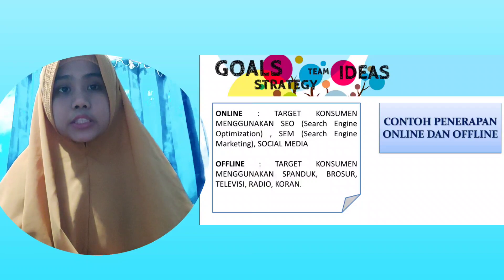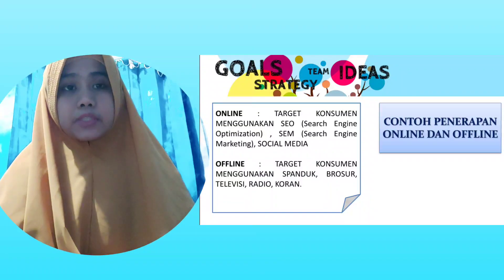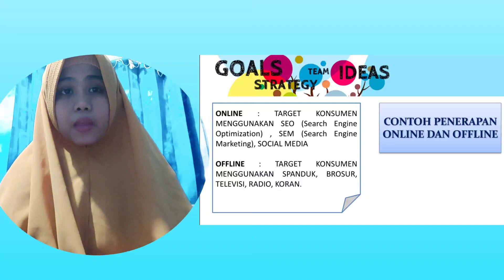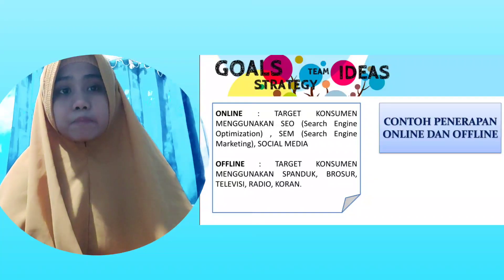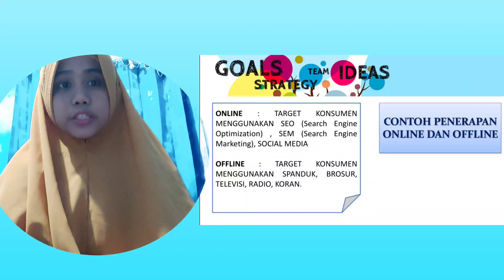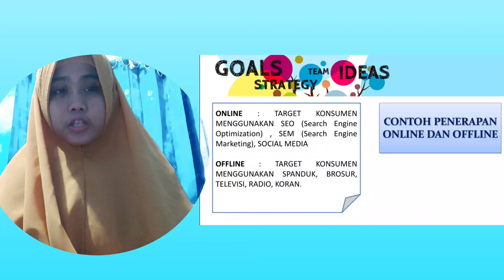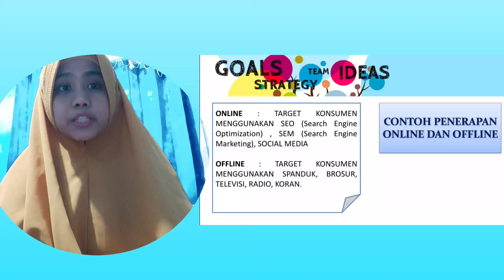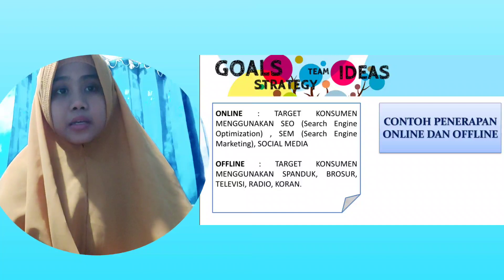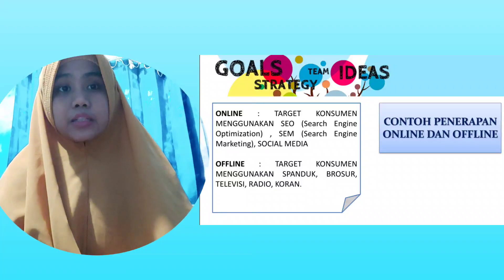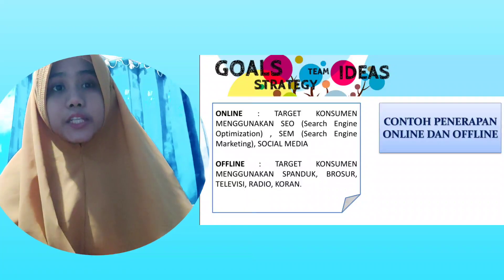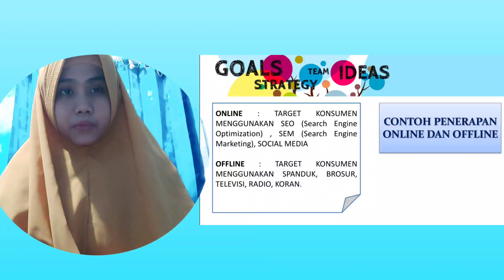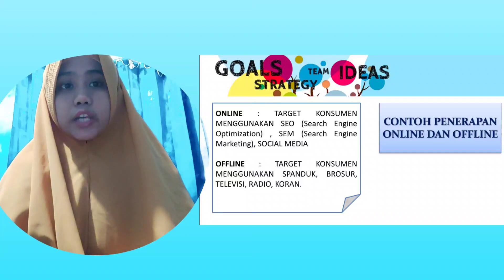Sebagai contoh penerapannya, seperti KFC. KFC itu ada tokonya secara offline dan online. Secara offline ada tempat makan seperti restoran, di mana pelanggan bisa makan langsung di situ dengan sistem delivery. Kalau secara online, mereka mempunyai website tersendiri di mana kita bisa pesan dan akan diantar. Jadi mereka menggunakan sistem online dan offline secara bersamaan. Online dan offline itu saling ketergantungan dan sangat berkaitan.